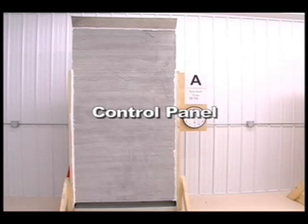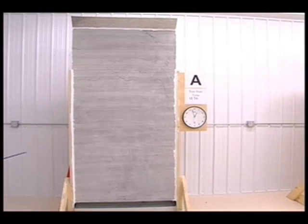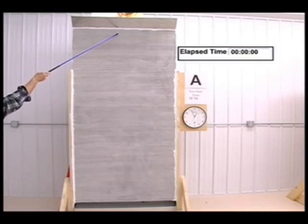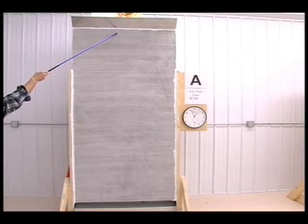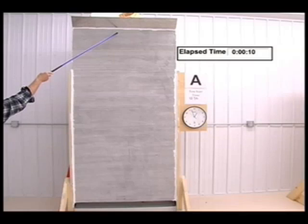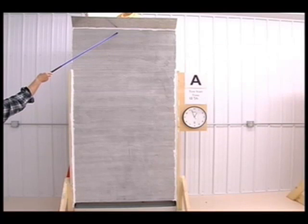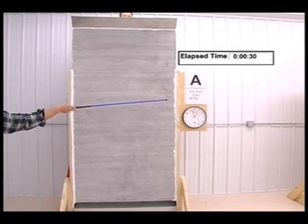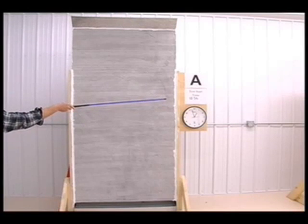Test panel A was a control panel with no design drainage system. At 12:56 p.m. Central Standard Time, two gallons of water were poured into test panel A's restricted water introduction trough. At 10 seconds of elapsed time, water patterns appeared on the top of the test panel. At 30 seconds of elapsed time, water patterns appeared on the edges of the test panel.